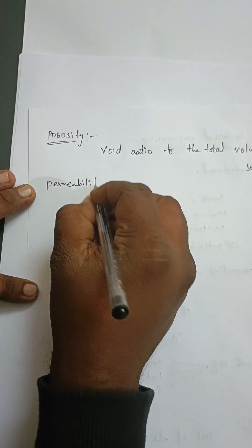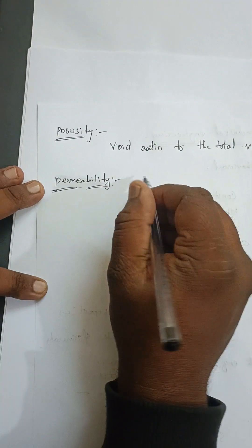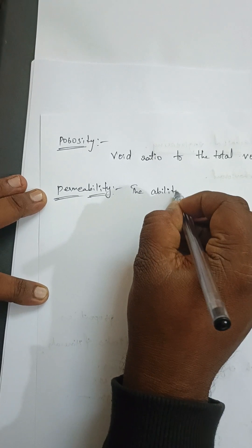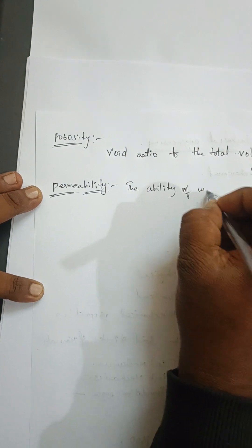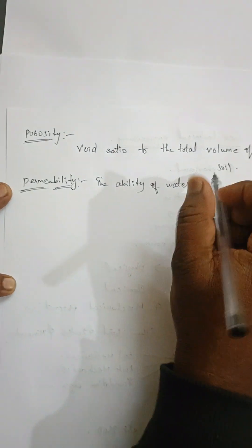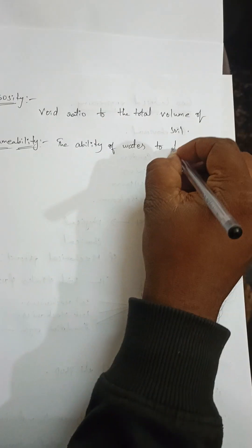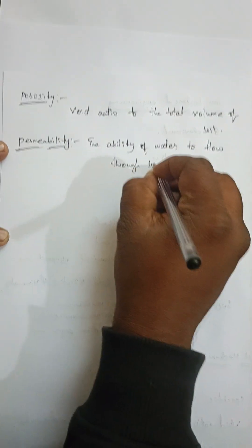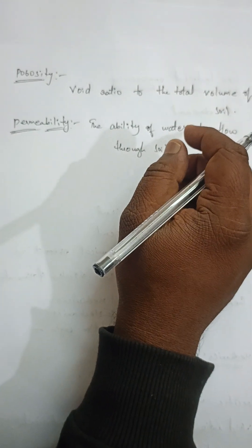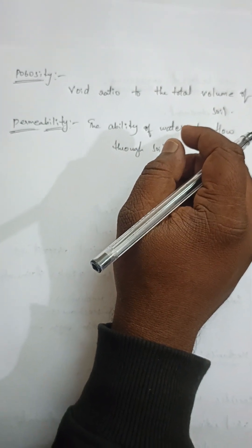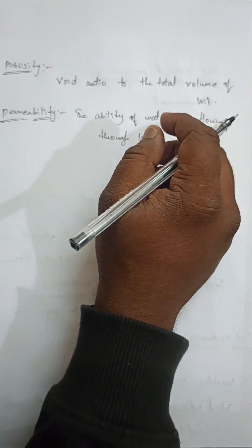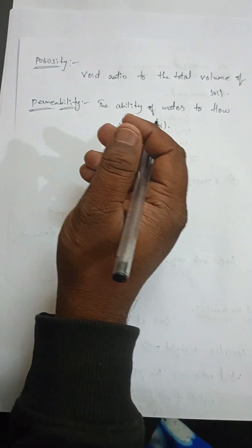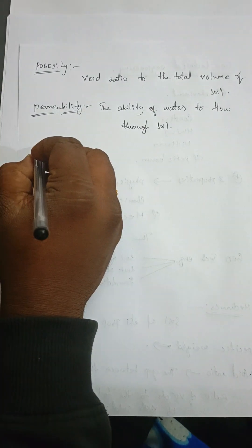The next property in soil mechanics is permeability. Most of you have heard about this. Permeability means the ability of water to flow through soil. If water has the ability to flow through the soil, that property is called permeability. The next property after that is compressibility.